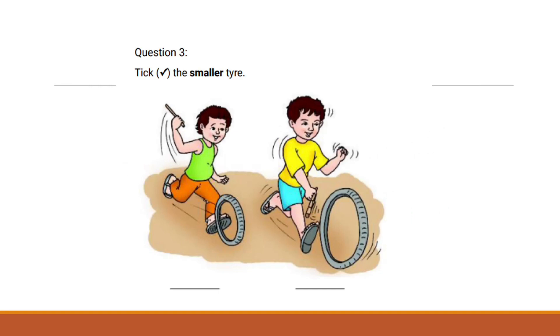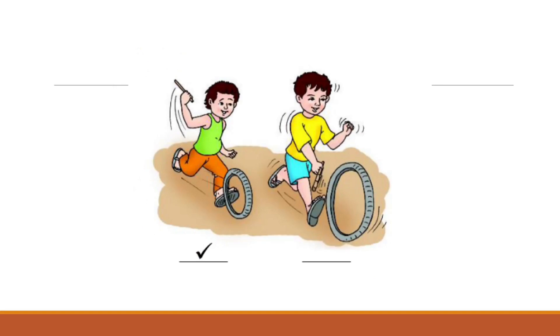Tick the smaller tire. The smaller tire is the one on the left. Its size is small compared to the tire on the right.